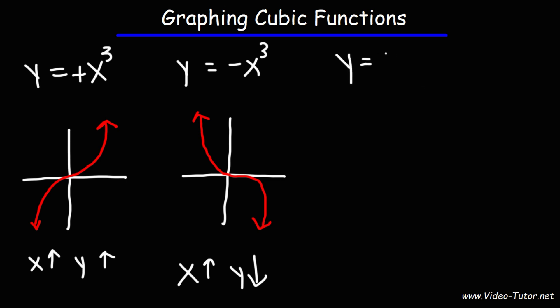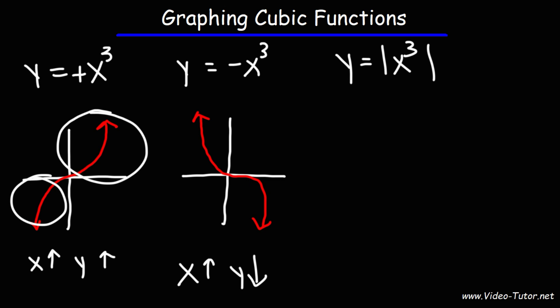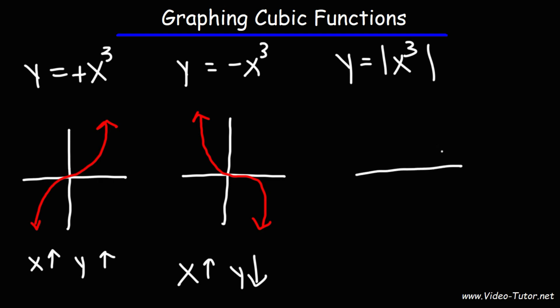If we were to put an absolute value symbol in front of the x cubed term, the right side of the graph is going to stay the same, but the left side is going to flip over the x-axis. All the negative values will become positive values. So the graph is going to look like y equals x squared — that's a rough sketch of it.